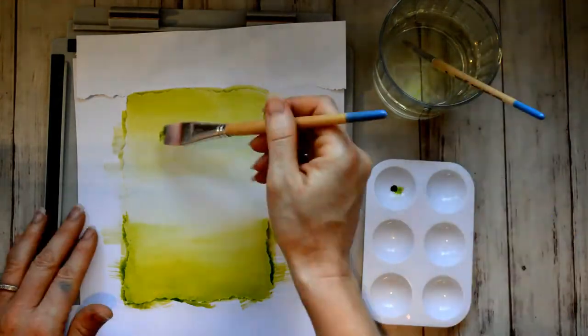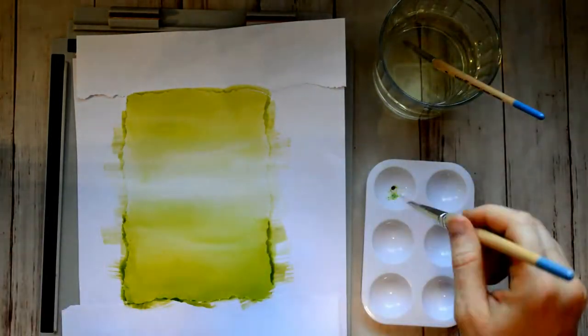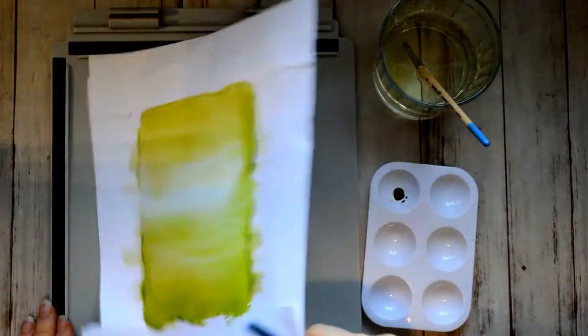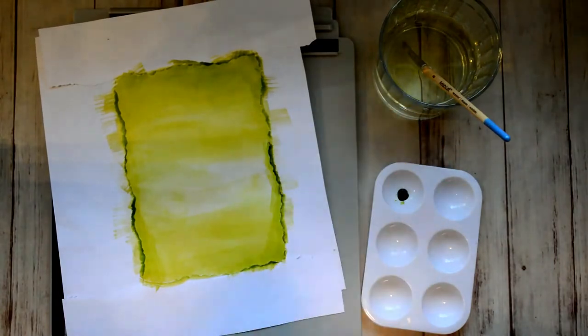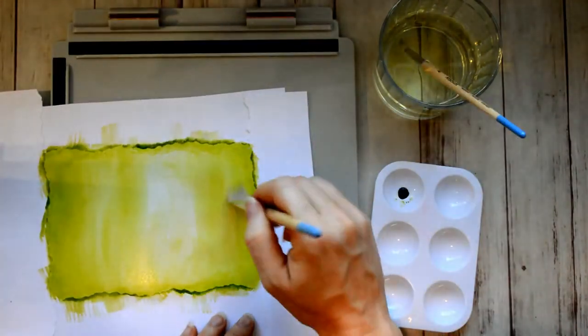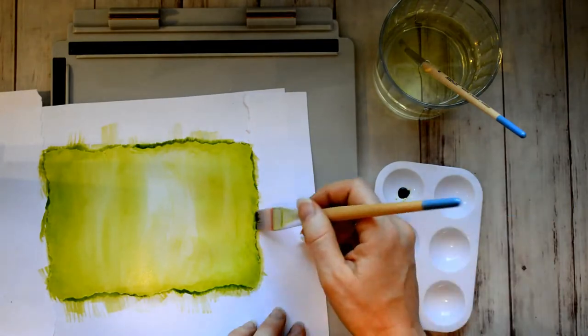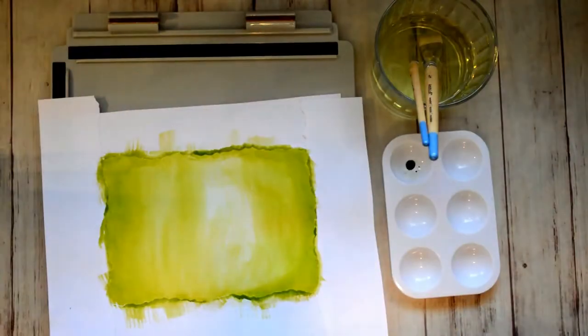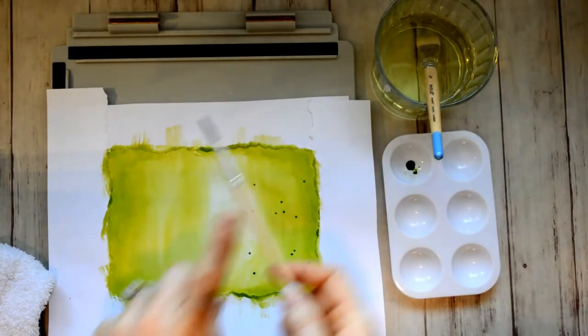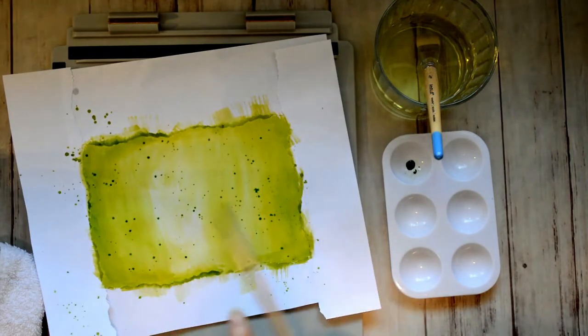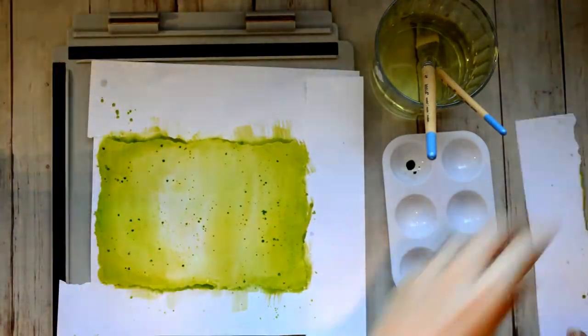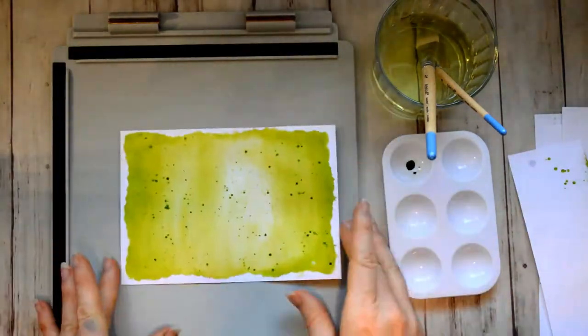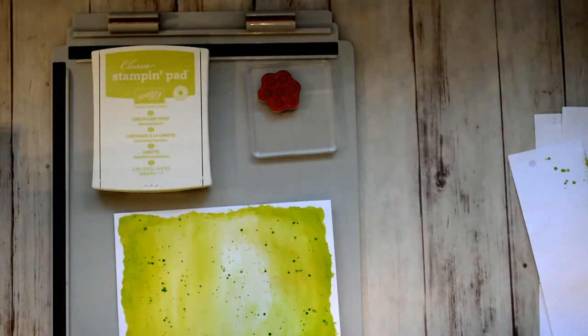Now I'm applying the ink. I just put some of the re-inker in the little tray there, and I'm just applying the ink to the paper, and I'm using regular cardstock. I think it's 110 pounds, so I'm not using watercolor paper. And I want a gradient effect, so I'm making the edges darker than in the middle. And you just keep playing around with it until it looks like how you want it.